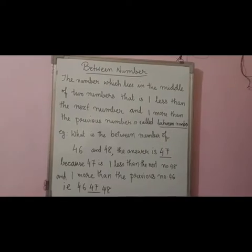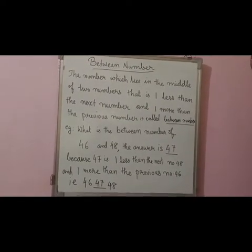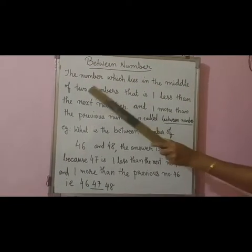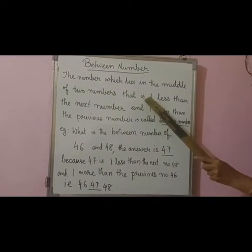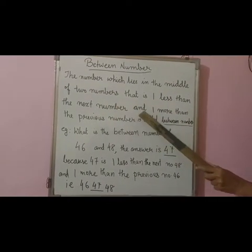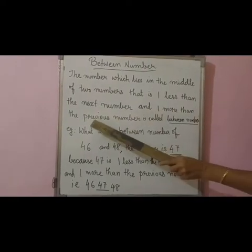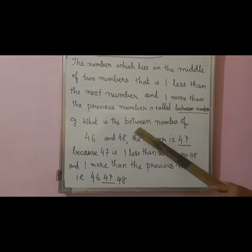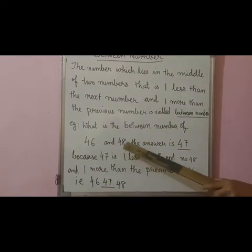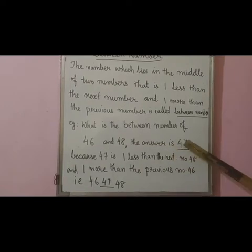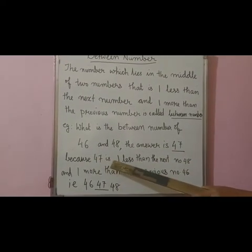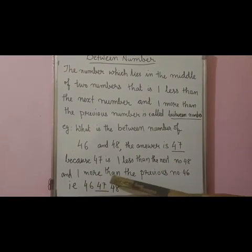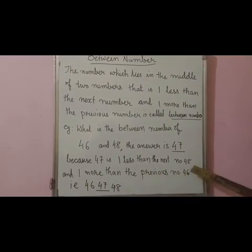Now I am going to explain about between numbers. What is between number? The number which lies in the middle of two numbers — that is one less than the next number and one more than the previous number — is called between number. Here I have given an example. What is the between number of 46 and 48? The answer is 47, because 47 is one less than the next number 48 and one more than the previous number 46.